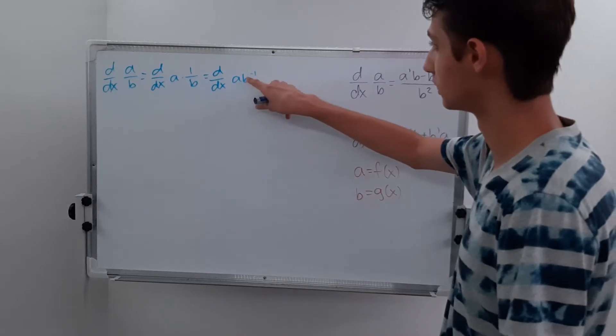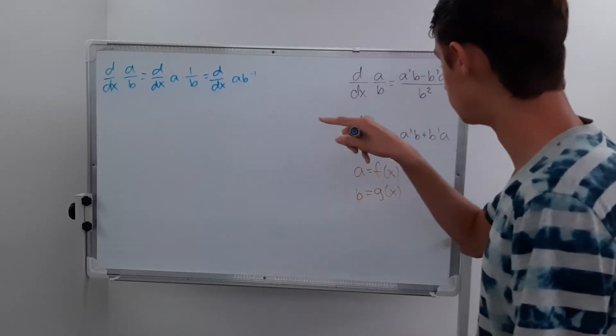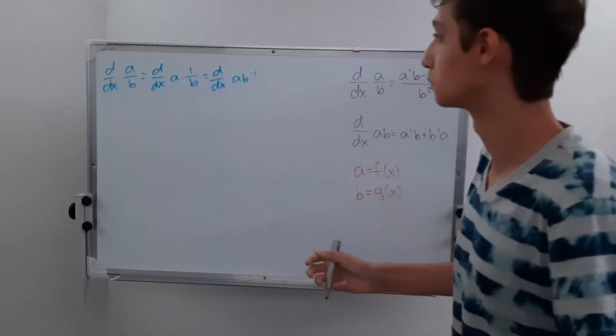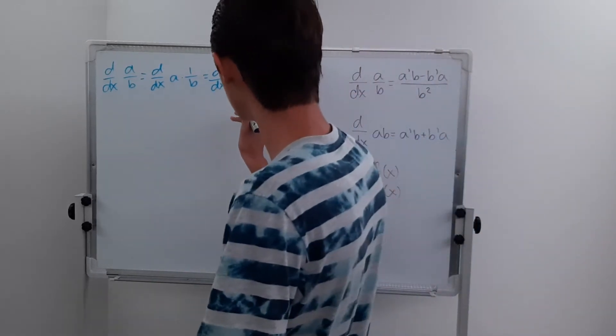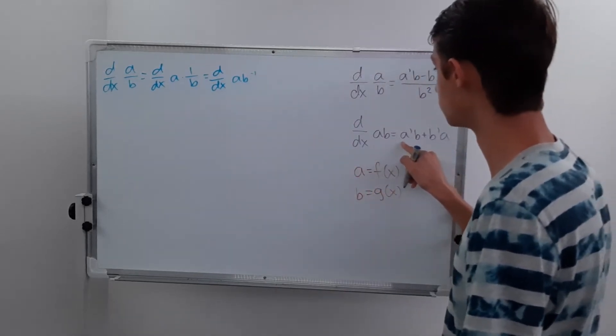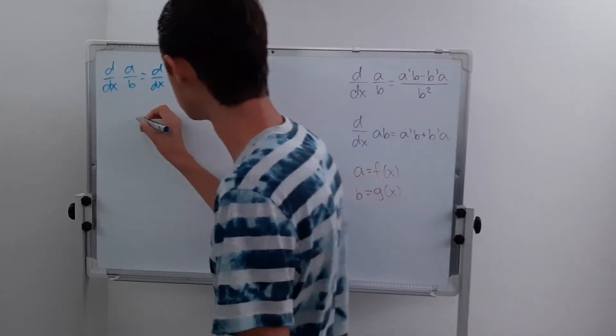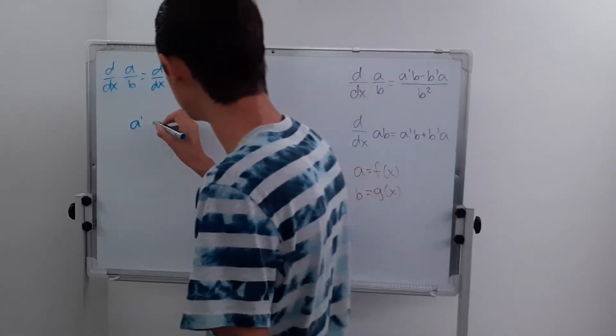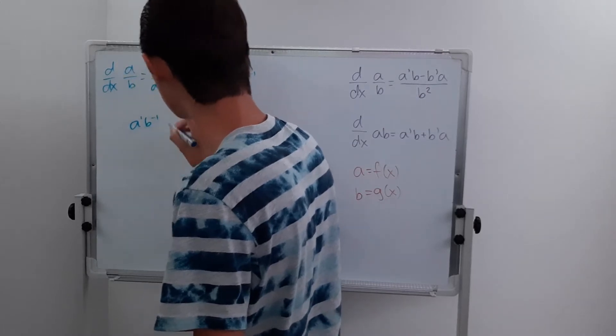And as you can see, we have the chain rule here with the negative 1. And so now we can actually take the derivative of this using the product rule. So first we start with our derivative of the first term, which is just a prime, and then we just write out b to the negative 1.